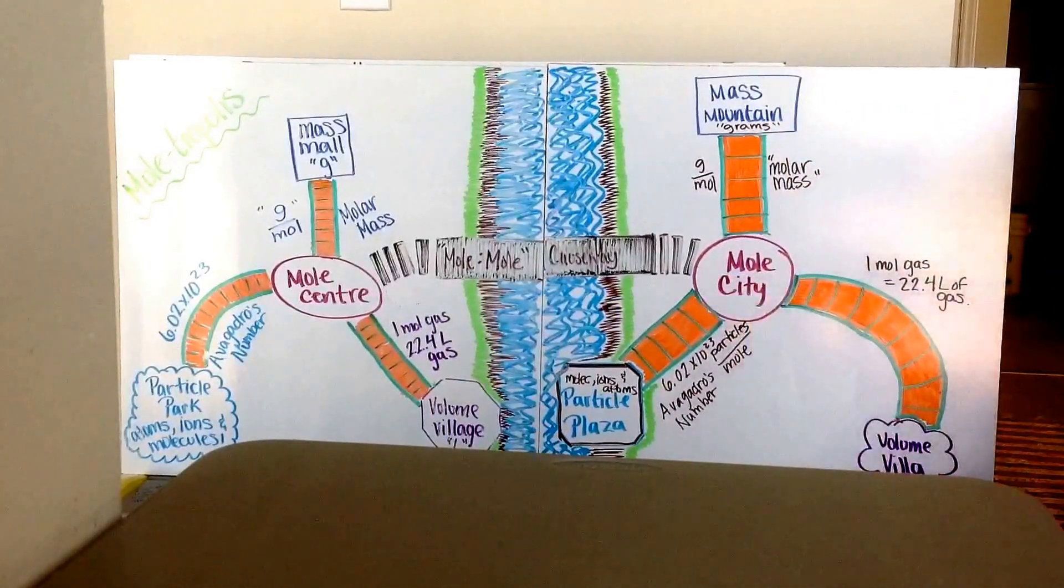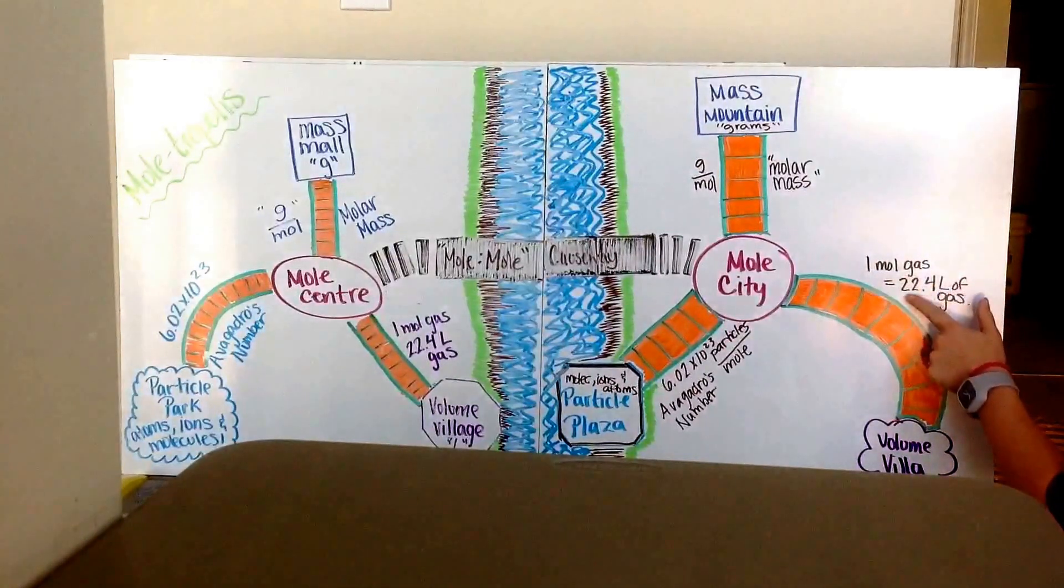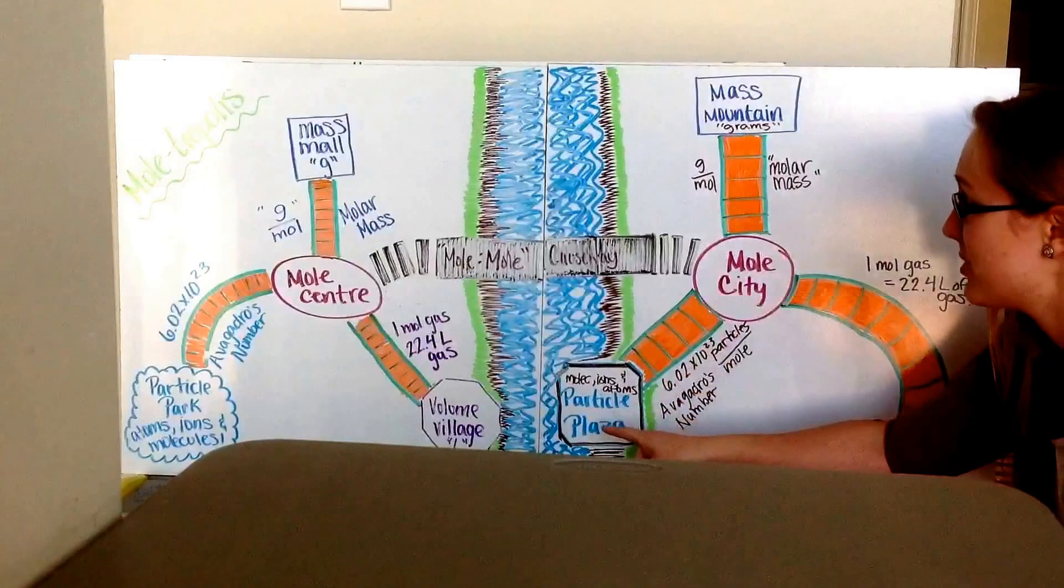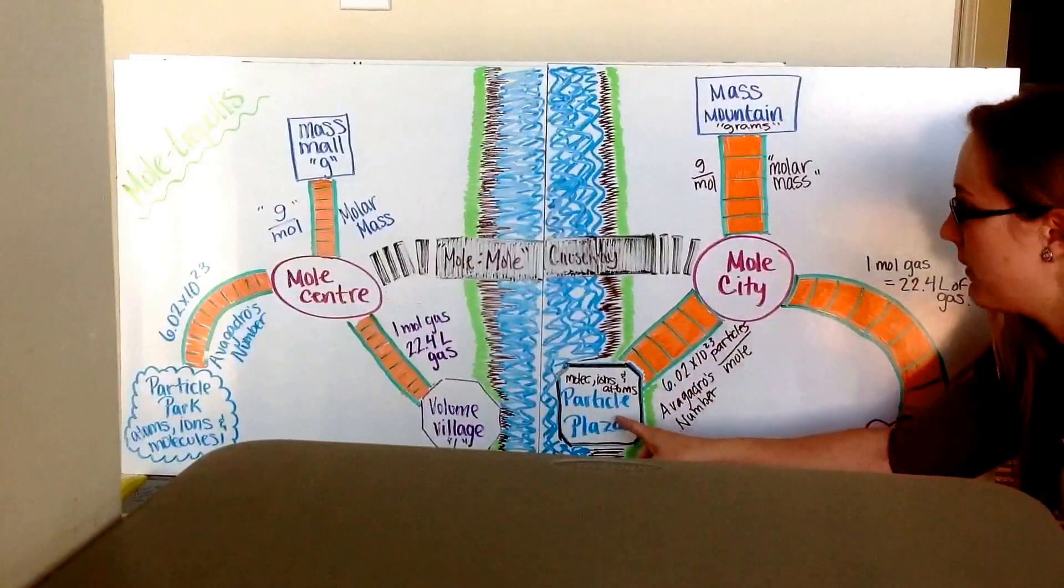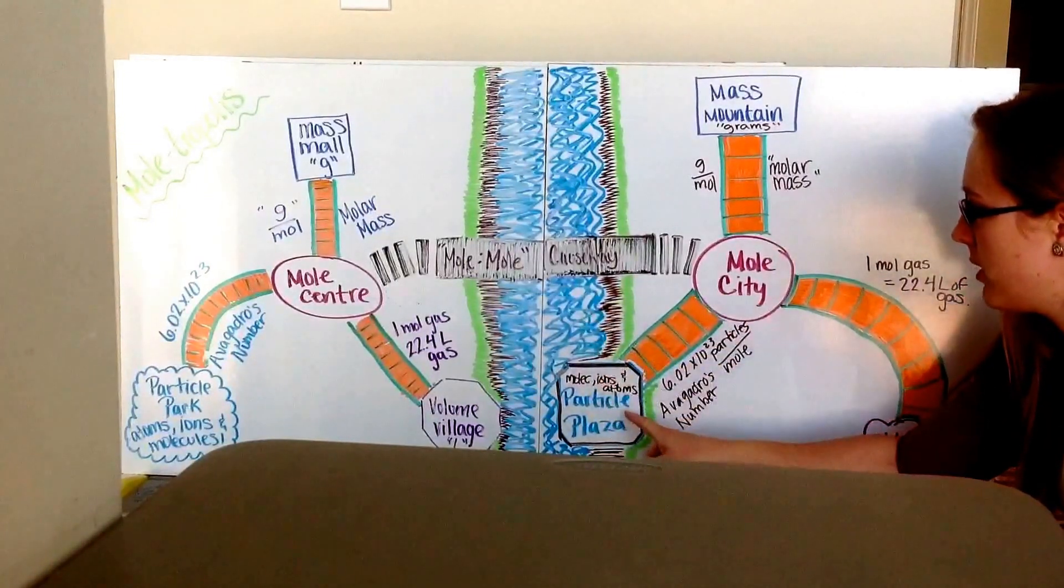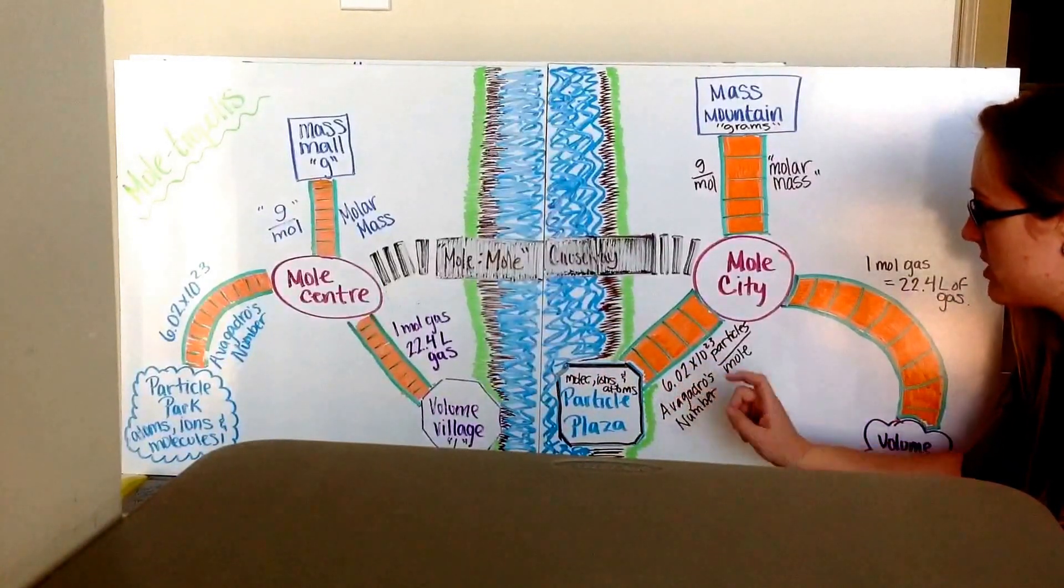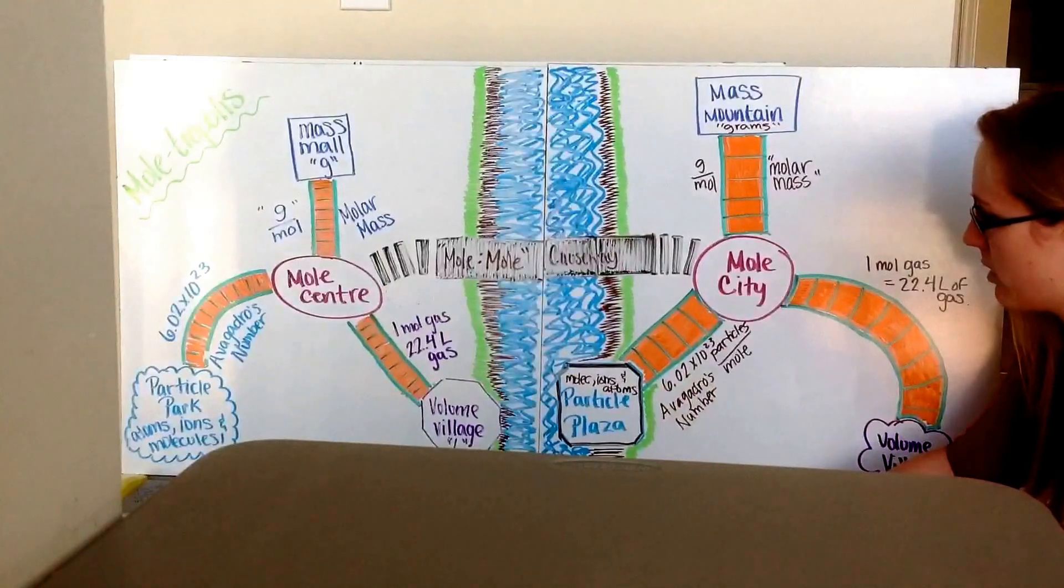I can go down to Volume Villa. To do that, I just use my 22.4 liters of gas for one mole. And then I can also go down from my Mole City down to Particle Plaza, which is a little gazebo overlooking the river. And to do that, I have to use Avogadro's number, 6.02 times 10 to the 23rd particles per mole.